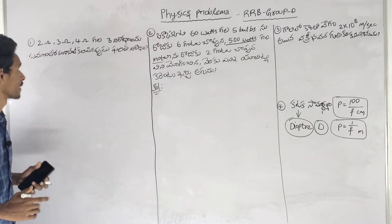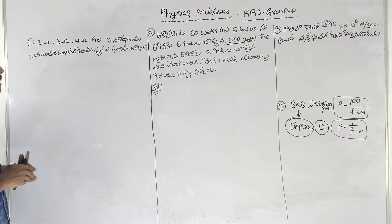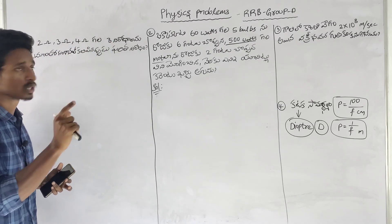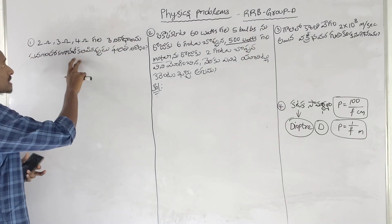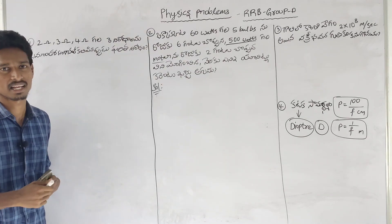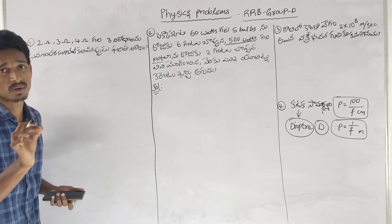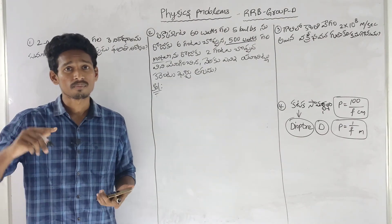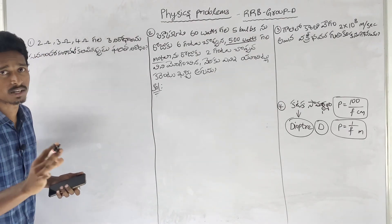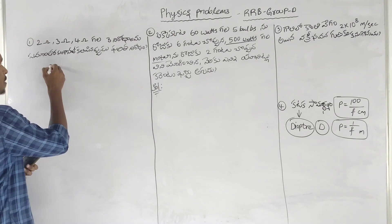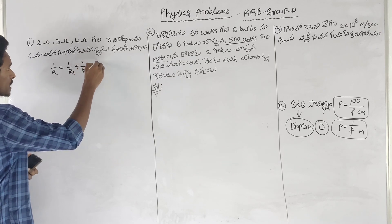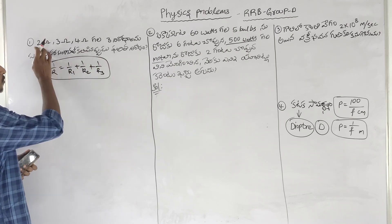I'll give you a question. We have to talk about 2-0, 3-0, 4-0. When we put up 3 waves, we are going to find the resistance between three waves. In this case, it is not a simple series difference. So you can use this formula: 1 by R is equal to 1 by R1 plus 1 by R2 plus 1 by R3.